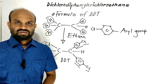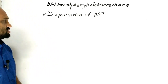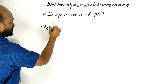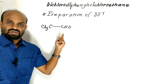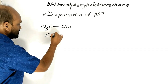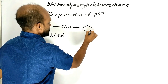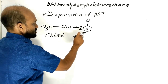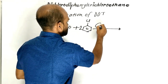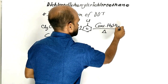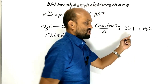Now let's see how we can prepare DDT — the preparation of DDT. We take Cl₃-C-CHO, which is trichloroacetaldehyde, also called chloral. This chloroacetaldehyde is treated with two molecules of chlorobenzene, and the reaction mixture is heated in the presence of concentrated sulfuric acid. Then DDT is obtained, and water is formed as a byproduct.